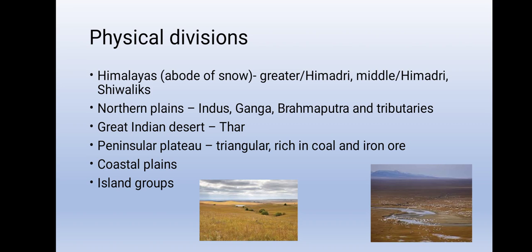We have the Great Indian Desert, the Thar Desert. We have the peninsular plateaus, which are triangular in shape and are rich in coal and iron ore. We also have the coastal plains and island groups.